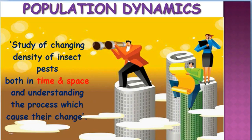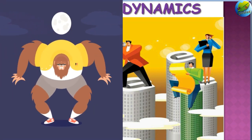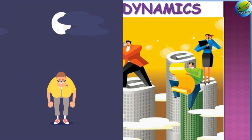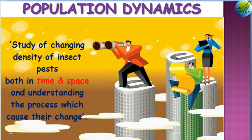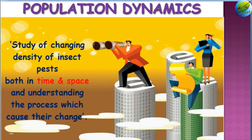What is population dynamics? Dynamics means the change or the variation. So, if we are studying the change in the density of insect pests both in time and space, and understanding the process which causes the change, it is called population dynamics.